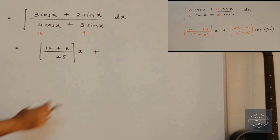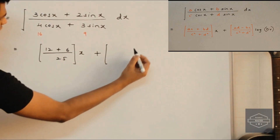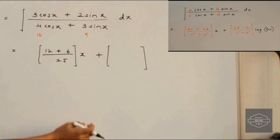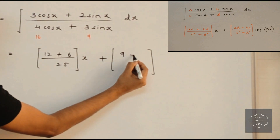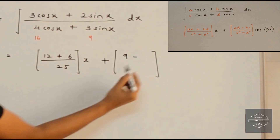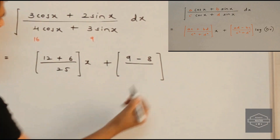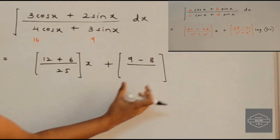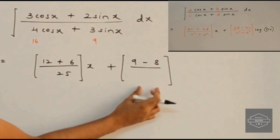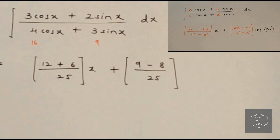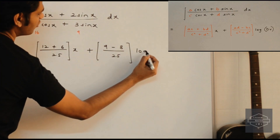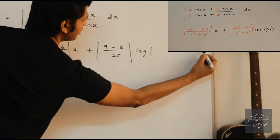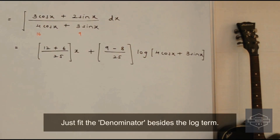For the second term we follow a criss-cross pattern: 3 into 3 is 9, minus 2 into 4 which is 8, upon 25 — and with the second term we multiply log of the denominator. And there we have our final answer.